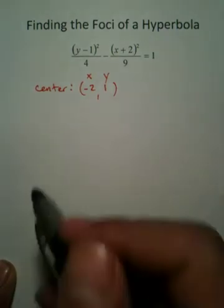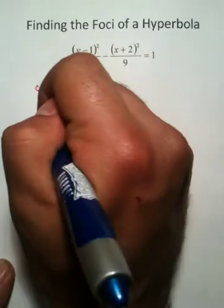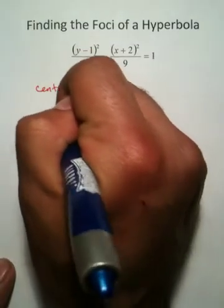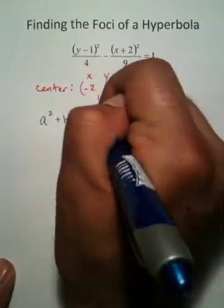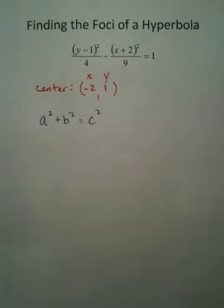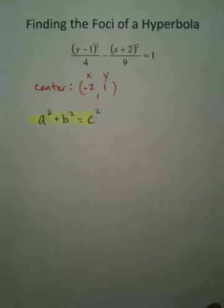Okay, so the difference between an ellipse and a hyperbola is a hyperbola uses this formula, the Pythagorean theorem. So that's one of the first things you have to study and decipher is when to use which formula for which.